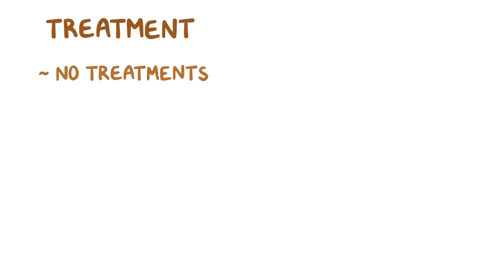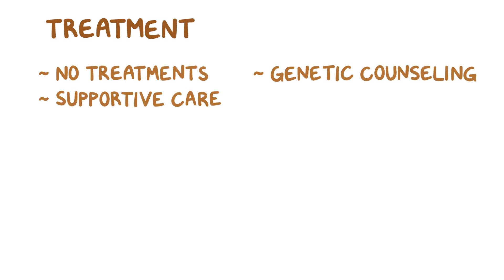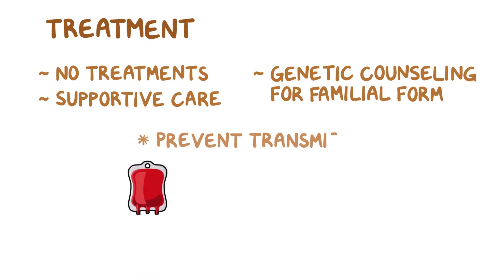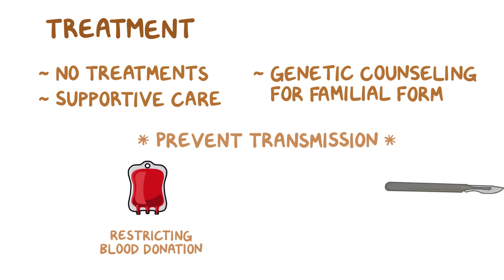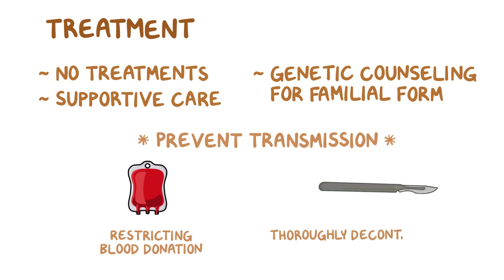There are currently no treatments for prion diseases. Supportive care should be given and genetic counseling should be offered for those with familial forms of the disease. It's best to prevent transmission of the prions by restricting blood donation from those with the disease and thoroughly decontaminating surgical equipment.